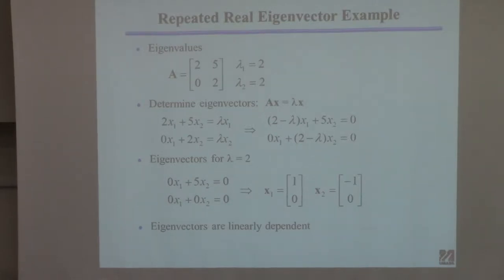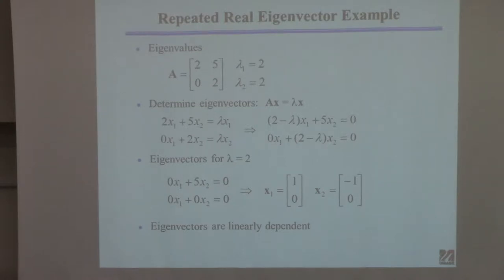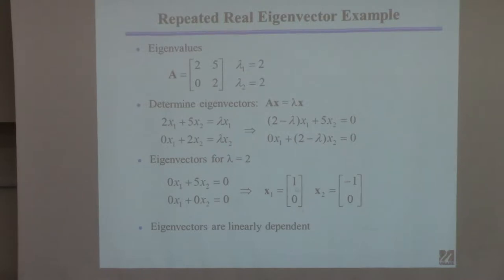What does that tell you? Looking at that set of equations, it tells me X2 has to be 0 — if X2 is not 0, you can't satisfy the first equation. What's X1? X1 is anything you want. Any X1 satisfies those two equations. So I just picked two that I liked — I have two eigenvectors, both with the second component being 0, and I picked 1 and minus 1.